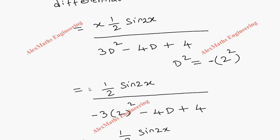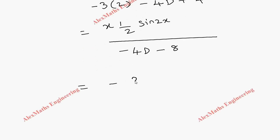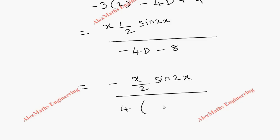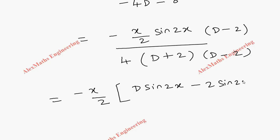We have x times half sin 2x divided by the result. Taking minus sign common, we get minus 4d, and the denominator simplifies to minus 8. We take minus sign common giving minus x by 2 sin 2x, then factor out to get d plus 2 in the denominator. We multiply by its conjugate d minus 2, so the numerator becomes minus x by 2 times d sin 2x minus 2 sin 2x.